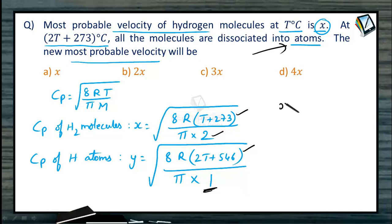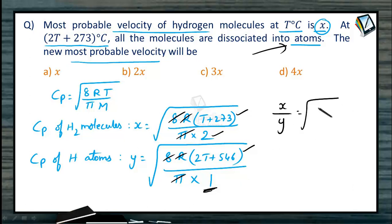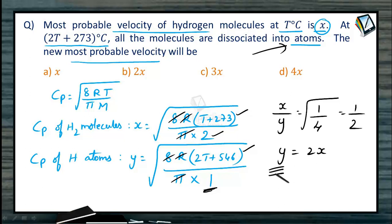Now take the ratio of x and y. The 8R, π terms cancel out. Factoring 2 from the numerator gives 2(t + 273), so we get √(1/4), which is 1/2. Therefore y = 2x — the most probable velocity of the hydrogen atoms is twice that of the most probable velocity of the hydrogen molecules under these temperature conditions.